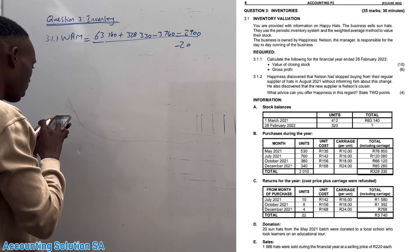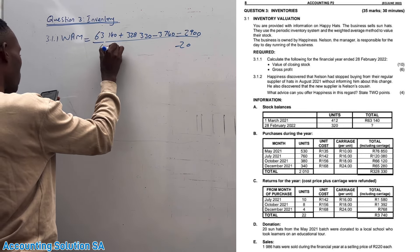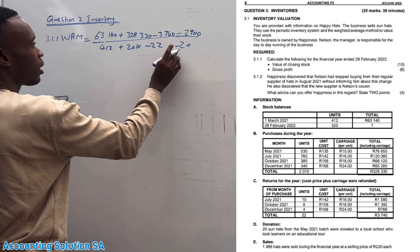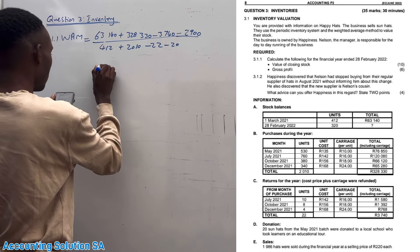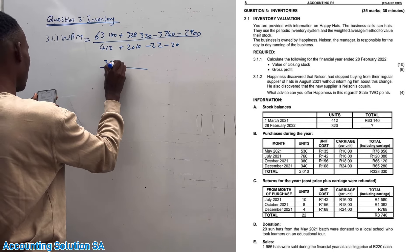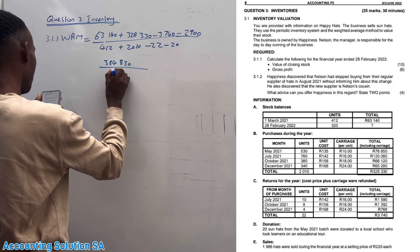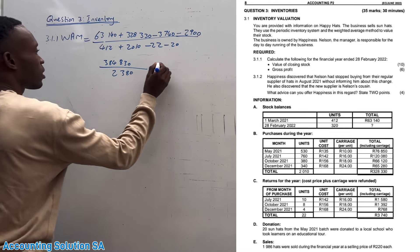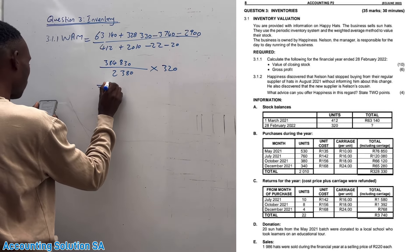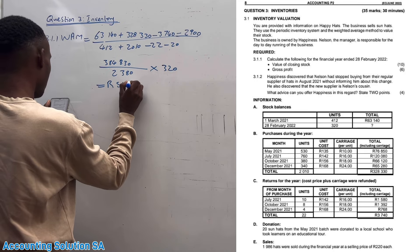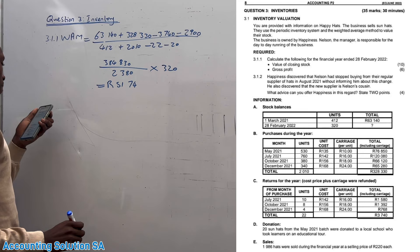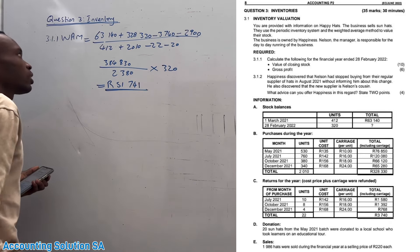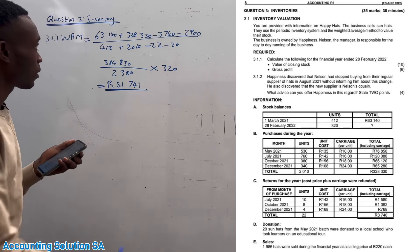Now we write the units for each amount. Opening balance was 412, plus purchases of 2,010, minus returns of 22, minus 20 units for the donation. On top we get a total of 384,830 and at the bottom we get 2,380 units. We then multiply by closing stock of 320 units to get our closing stock total of 51,741. This is our closing stock value.